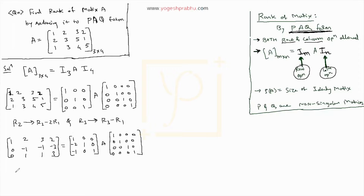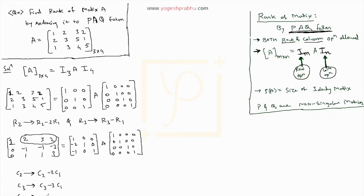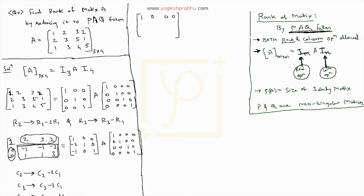The next step is to make all the entries in the first row to the right of the pivot into zeros. For that we will do column operations. Using the leading 1, we perform: C2 becomes C2 minus 2C1, C3 becomes C3 minus 3C1, and C4 becomes C4 minus 2C1. This will give us all zeros in those positions.